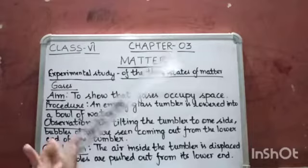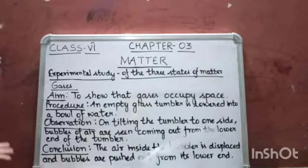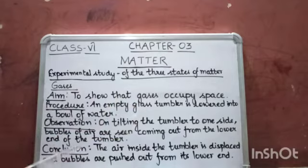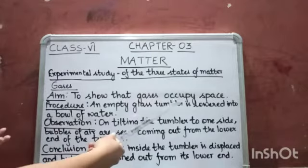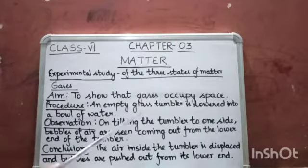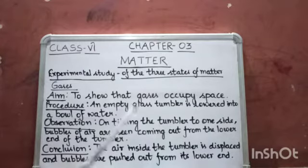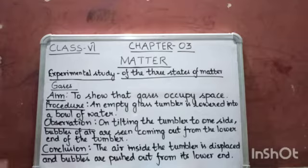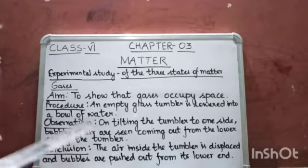Now this experiment shows that gases also occupy space. This is how you'll be writing in your activity file. Aim: to show that gases occupy space. Procedure: take an empty glass tumbler, which is lowered into a bowl of water. Observation: on tilting the tumbler to one side, bubbles of air are seen coming out from the lower end of the tumbler. Conclusion: the air inside the tumbler is displaced and bubbles are pushed out from its lower end.